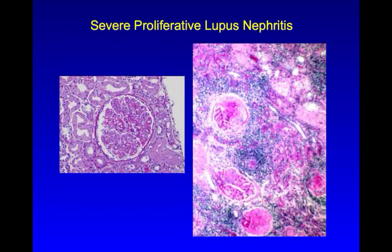An inflammatory GN, such as with lupus, can rapidly damage glomeruli and tubules with immune complexes and inflammatory mediators, leading to cell proliferation, interstitial inflammation, and eventually irreversible scarring.